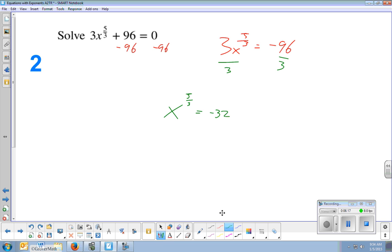Negative 32. And now that I have simply a base, an exponent, an answer is one way to look at it. My base is x, my exponent is 5 thirds,